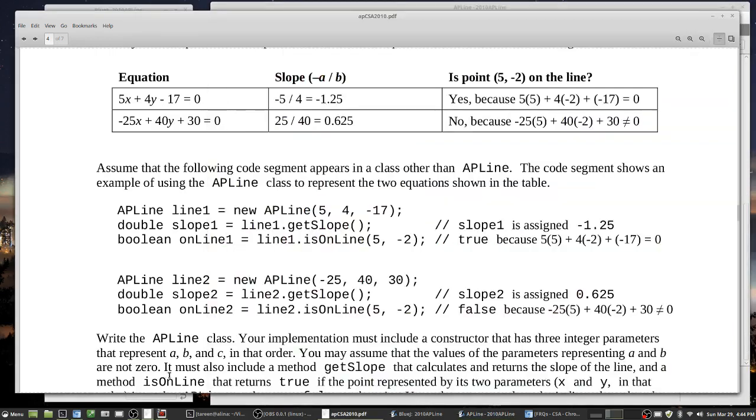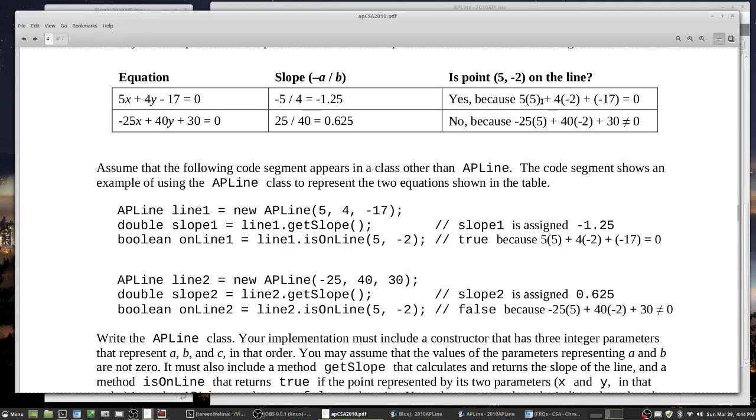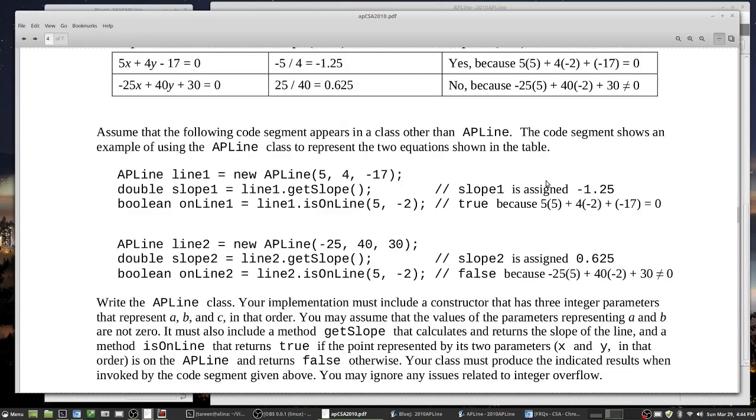The last thing is this isOnLine method. Basically, if we have a series of values for a, b, and c, it is on the line if this equation gets evaluated to zero. If it does not come out to be zero, then it's not on the line. This is going to return a boolean - we just have to figure out this equation, determine whether it's zero or not, and then return a boolean based on that value.